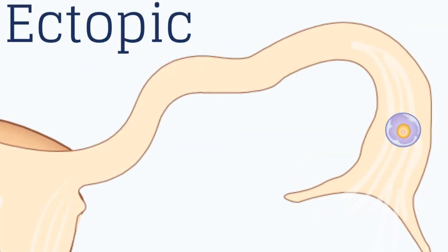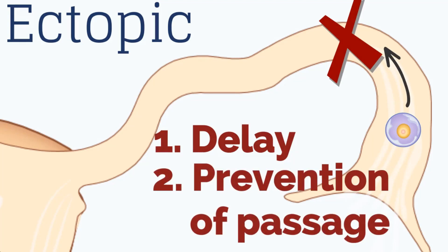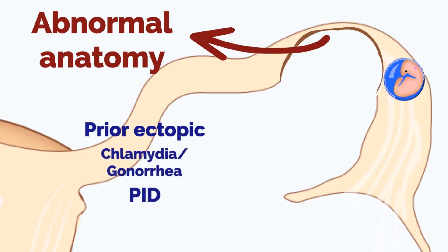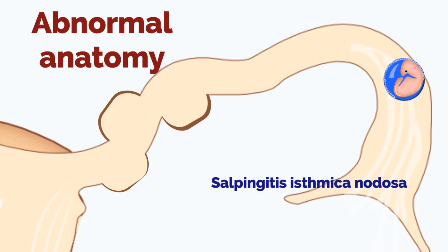Now that we have reviewed normal function of the fallopian tube and normal implantation in the endometrium, what causes an ectopic pregnancy? Most ectopic pregnancies occur in the fallopian tube when there is a delay or prevention of the passage of the fertilized oocyte to the uterine cavity secondary to abnormal fallopian tube anatomy. Abnormal anatomy can occur with prior ectopic pregnancy, inflammation and scarring from chlamydia, gonorrhea, or pelvic inflammatory disease, peritubal adhesions from surgery or endometriosis, or salpingitis isthmica nodosa, which results in nodular thickening of the proximal tube.